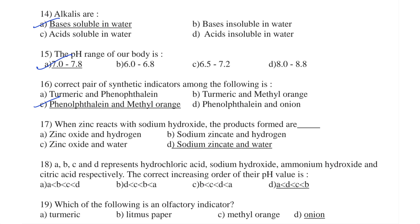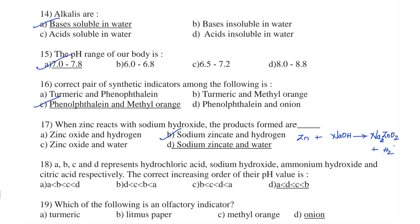Question number 17. When zinc reacts with sodium hydroxide, the products formed are: Option A — Zinc oxide and hydrogen, Option B — Sodium zincate and hydrogen, Option C — Zinc oxide and water, Option D — Sodium zincate and water. The reaction is: Zn + 2NaOH → Na₂ZnO₂ (sodium zincate) + H₂. The formula of sodium zincate is Na₂ZnO₂, and hydrogen gas is liberated. To balance this reaction, a 2 is placed in front of sodium hydroxide.